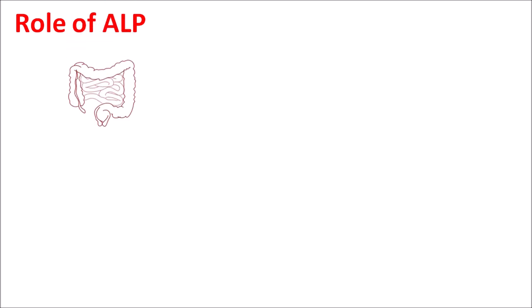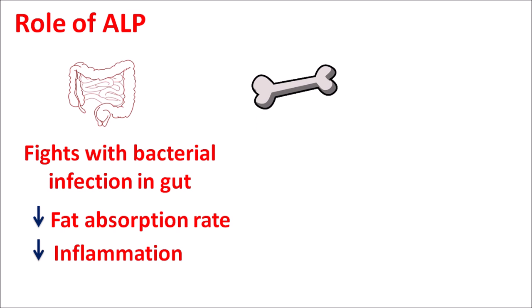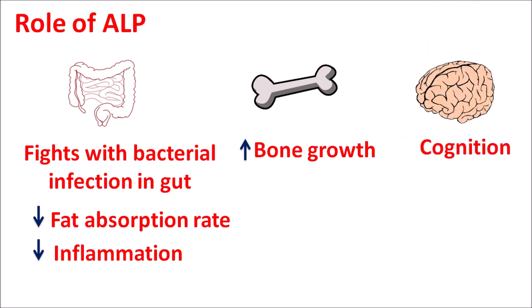Now let us see the role of alkaline phosphatase enzyme. Even though the exact role is not completely clear, this enzyme plays an important role at the intestine where it fights harmful bacteria in the gut, preventing bacterial infection. This enzyme also reduces the absorption rate of fat, thereby controlling cholesterol levels. It also reduces the risk of inflammation, and at the bones it is responsible for increased bone growth by increasing mineralization. At the central nervous system it is responsible for cognition. ALP has many roles but they are not completely specific because it has a broad functional role in our physiological system.